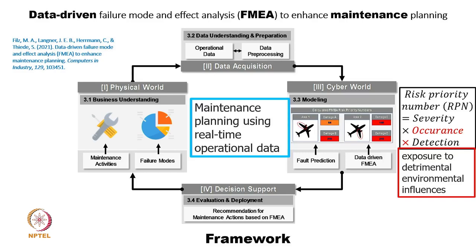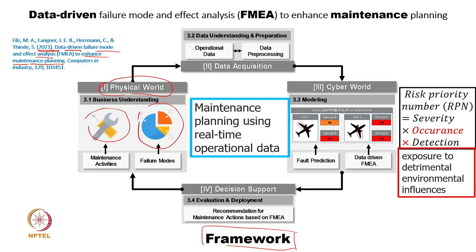We take an example from a 2021 literature paper titled 'Data-Driven Failure Mode Effect Analysis,' which utilized a data-driven approach with FMEA to enhance maintenance planning. They suggest a framework: the first module is the physical world — understanding the system, identifying failure modes, and what maintenance strategy people are using. Then sensors are mounted to procure key features and data. This data is processed and brought into the cyber world — a 3D simulation of the real/physical system — forming what is called a cyber physical production system.